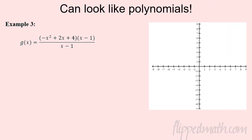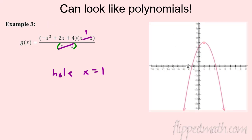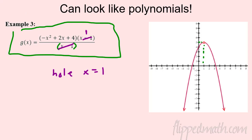Some weird things can happen. Example 3 is already factored — these cancel, so I know I have a hole at x = 1. Looking at the graph, this is a parabola — a quadratic. The factors canceled out and you're left with -x², which is just a polynomial. The only difference is it's got a hole where x = 1, approaching y = 5 from both sides. The original was a rational function that simplified to a polynomial with a hole.